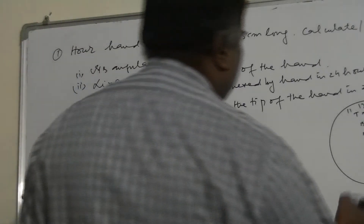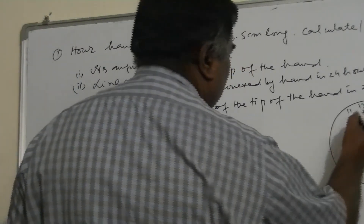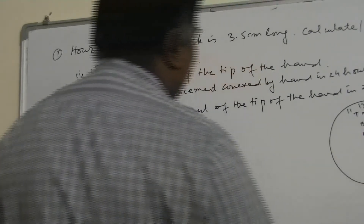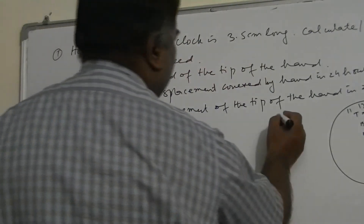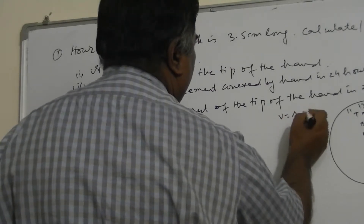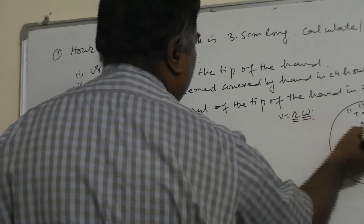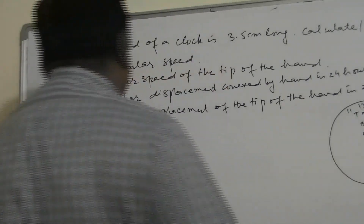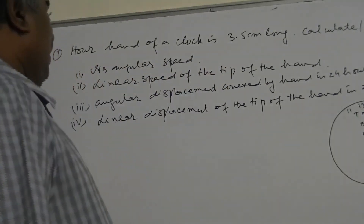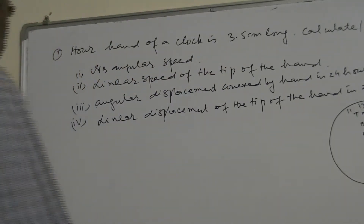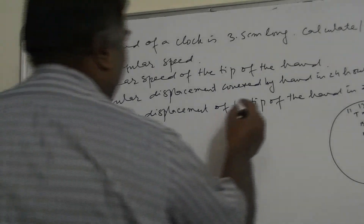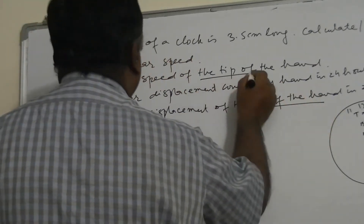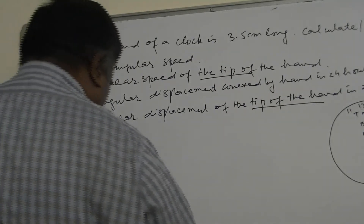But for linear speed, points T, B, and A all have different linear speeds because V equals R times omega. Even if omega is the same, R is not the same for points A, B, and T. So V will be different, and clearly the linear displacement will also be different. Therefore the word 'tip' is necessary for linear speed and linear displacement.